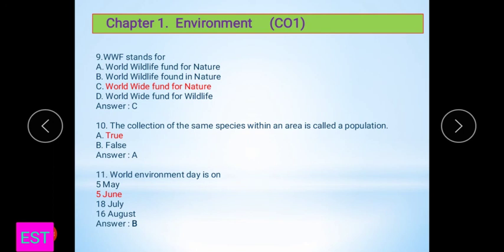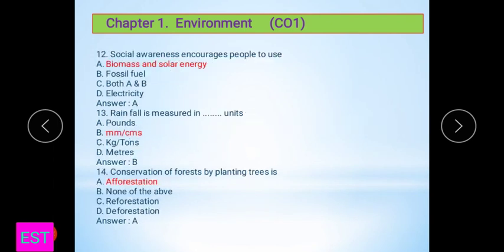Next question: The World Environment Day is celebrated on which day? That is 5th June. That is a very important question. Next question twelve: The social awareness encourages people to use biomass and solar energy. A option is correct. The rainfall is measured in either mm or centimeter. That's where B is the correct answer for units.